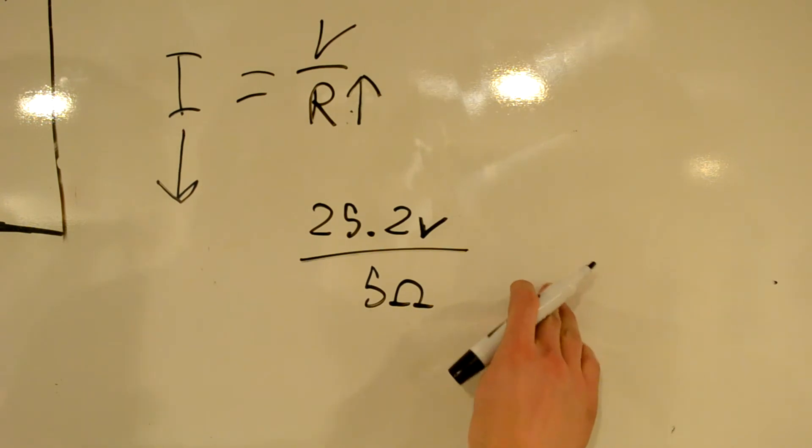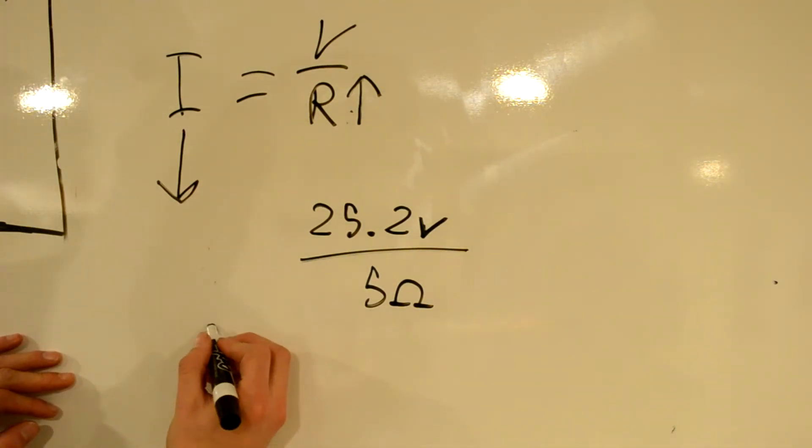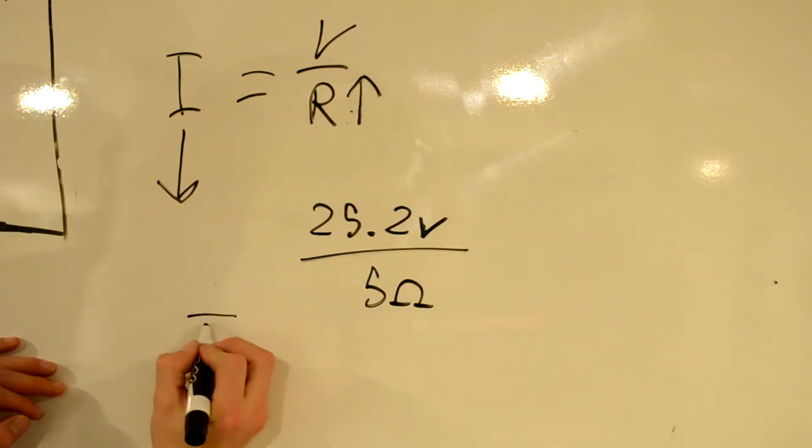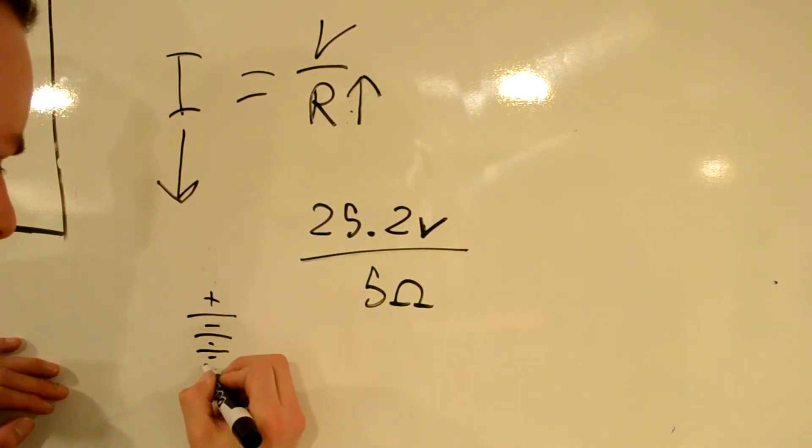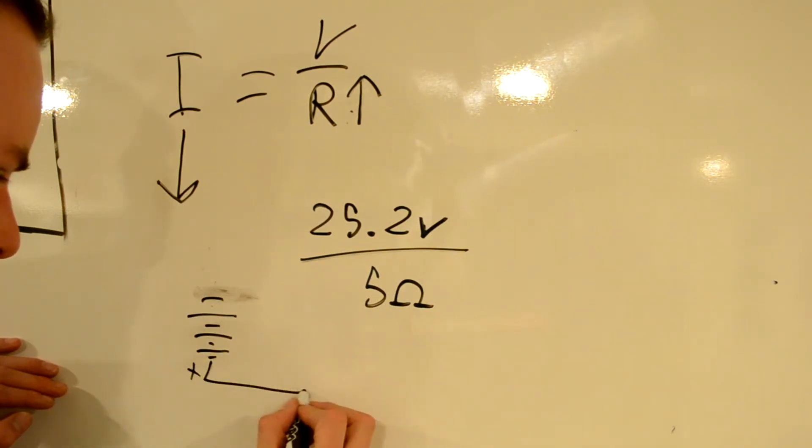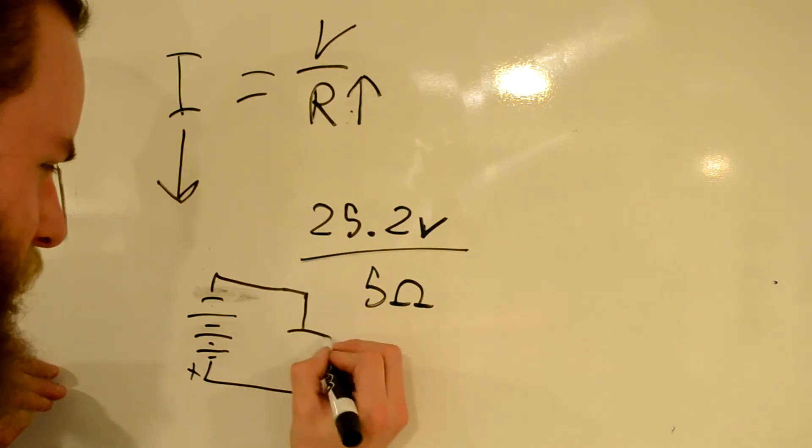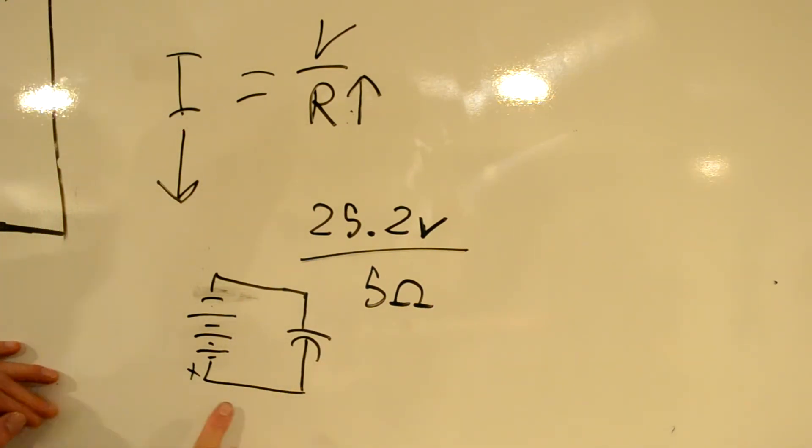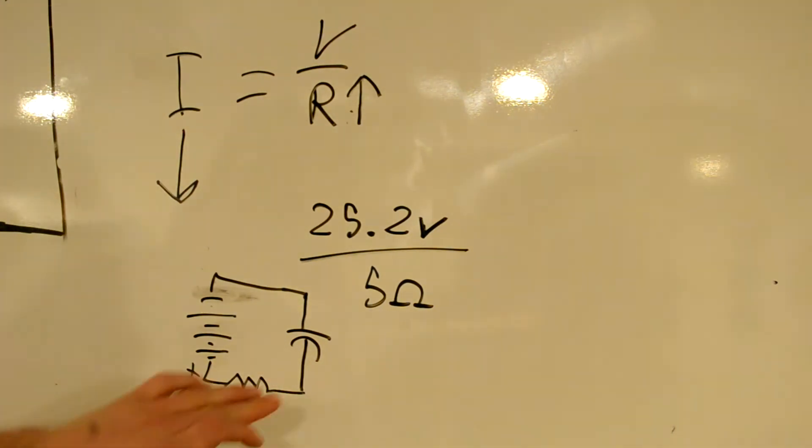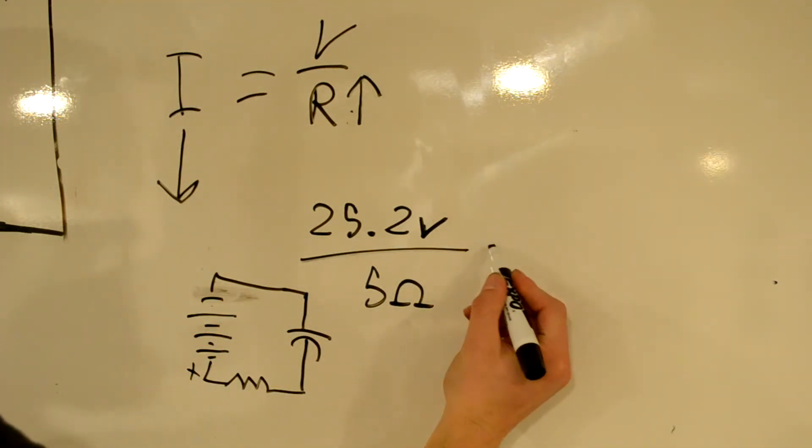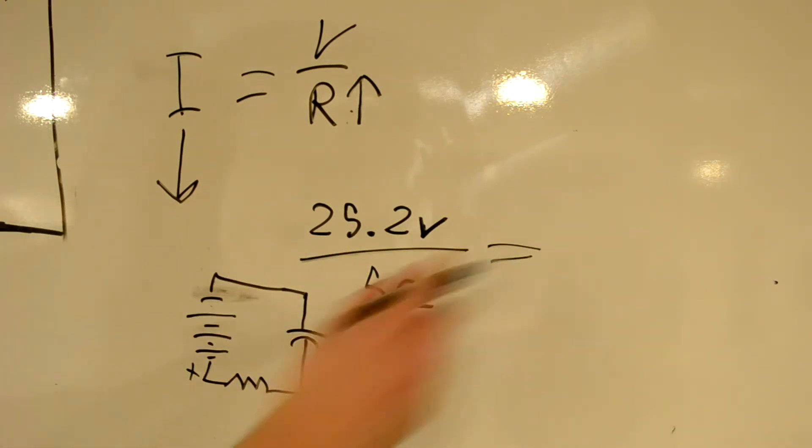Because we're not just dealing with the capacitor anymore. Basically we have our battery, our capacitor. But in series with this, we put a resistor. So we artificially raise the equivalent series resistance of the circuit. So 25.2 divided by 5 is going to give us amps.